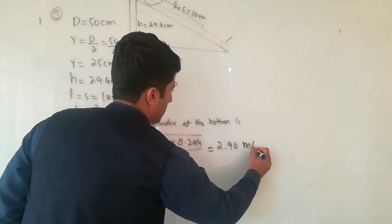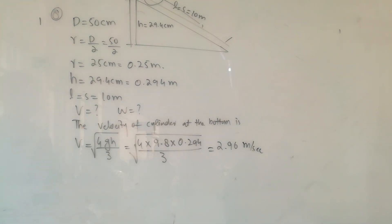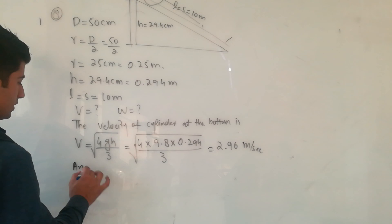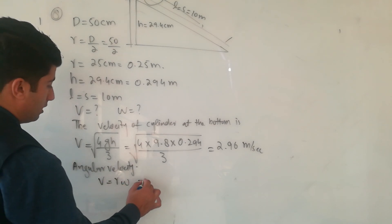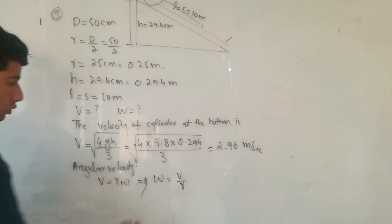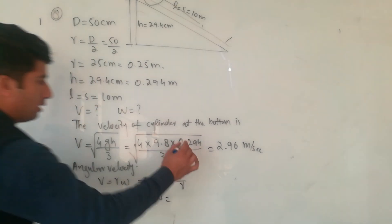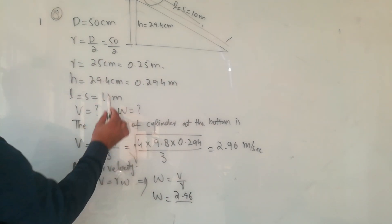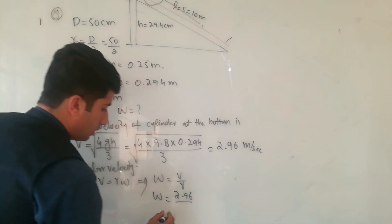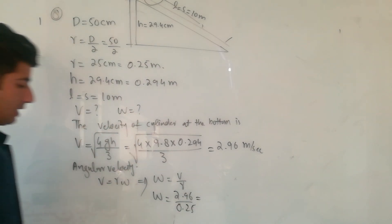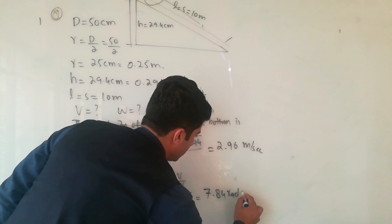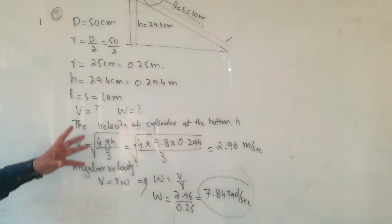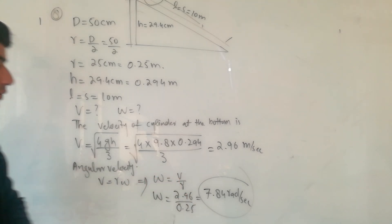That's the linear speed or linear velocity. Now angular velocity: the relationship between linear velocity and angular velocity is v equals r omega, so omega equals v divided by r. Omega equals v, which is 2.96, divided by r, which is 0.25. You will get 7.84 radian per second. So the cylinder has this linear velocity and angular velocity.